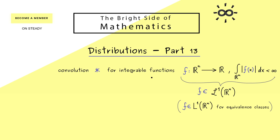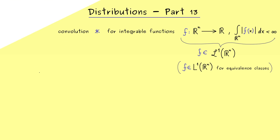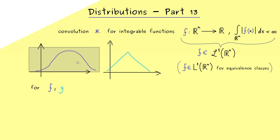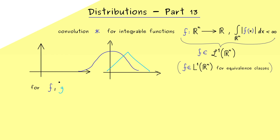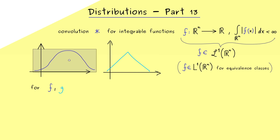For such integrable functions we can define the convolution — this is like a multiplication for two functions. The rough idea comes when you look at the graphs of the functions. Say we have a function f here and another function g there. One could move the one graph over the other and look at the area: one multiplies g with this moved f and integrates over the whole space, done for every point in time of this moving. So let's put this into a formula now.